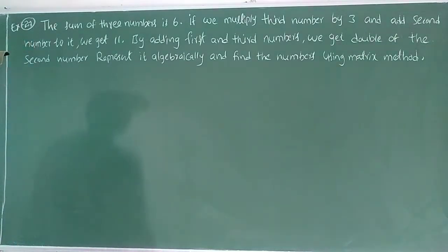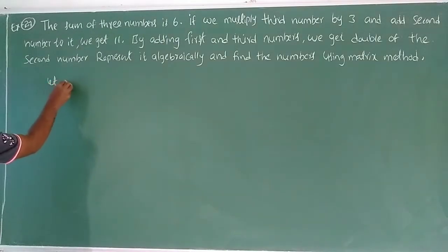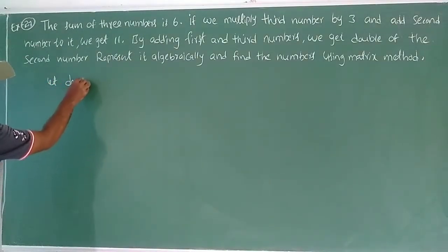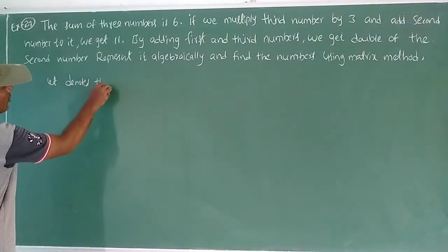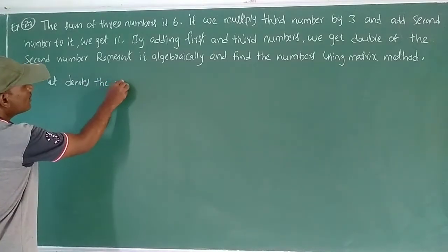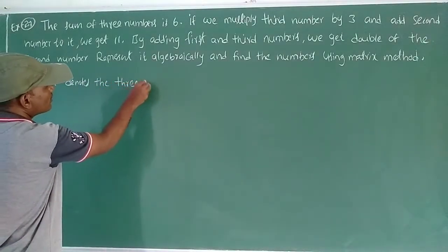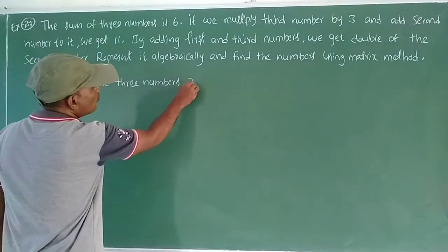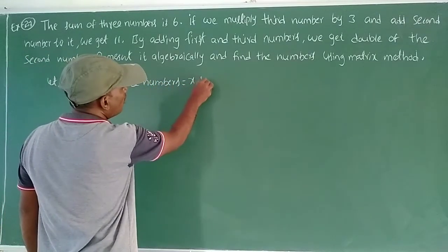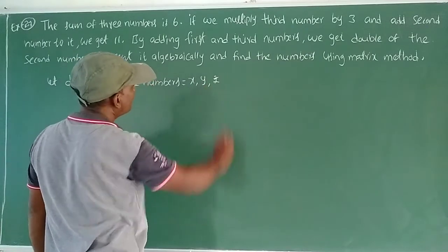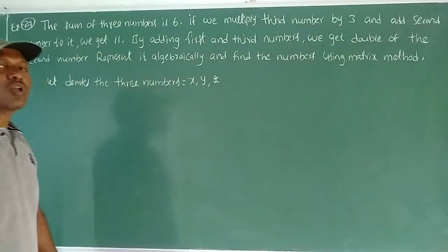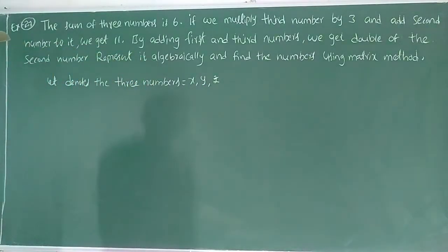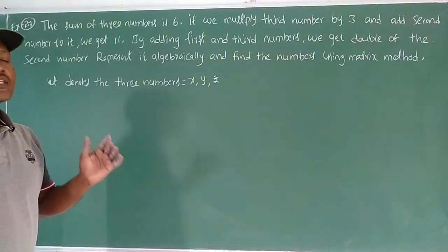First, let us denote the three numbers as small x, small y, and small z.